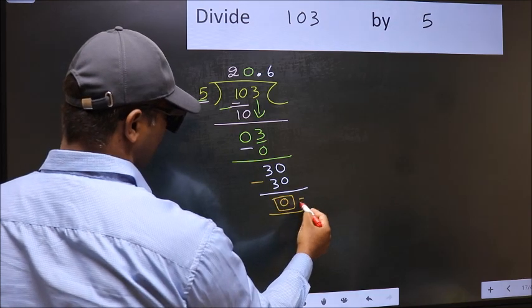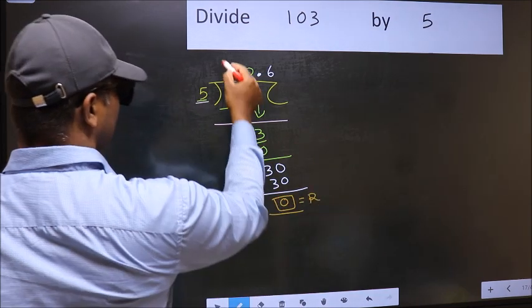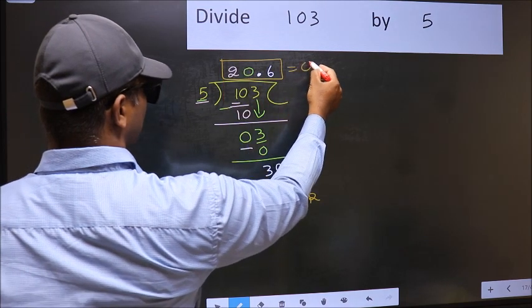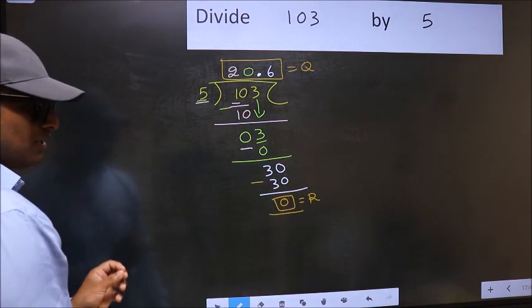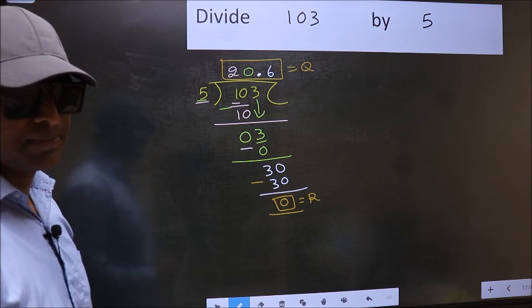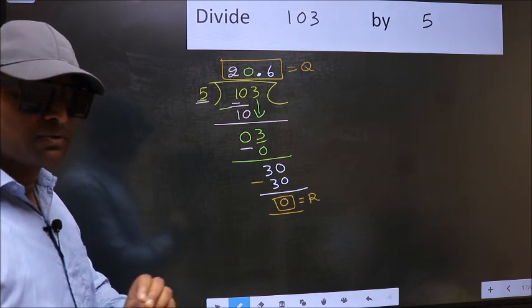So this is our remainder and this is our quotient. Did you understand where the mistake happens? You should not do that mistake.